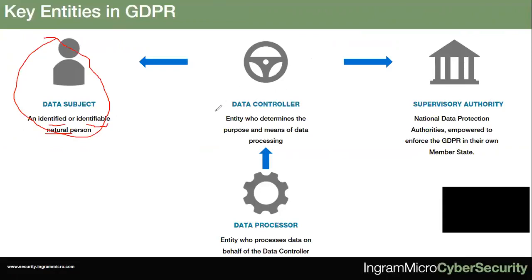The other concerned entities are the data controller and the data processor. The data controller is the entity that determines the how and the why of data processing — the purposes and means. The data processor processes data purely on behalf of the data controller. For example, when a data subject opens a bank account and submits their data, the bank decides the how and why of processing that data — name, financial details, nationality, salary, and so on — and therefore the bank is the data controller.